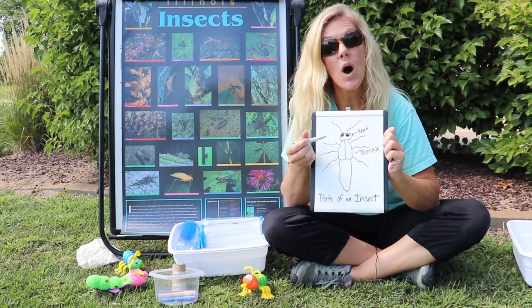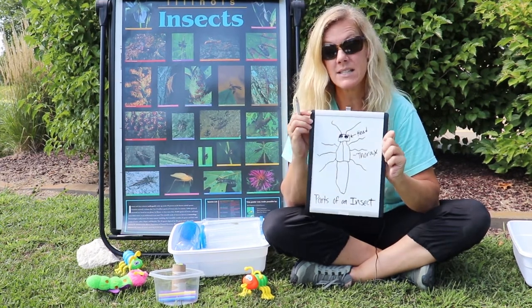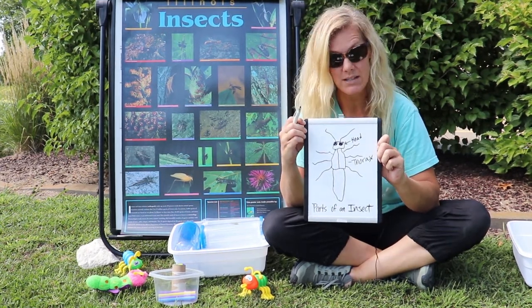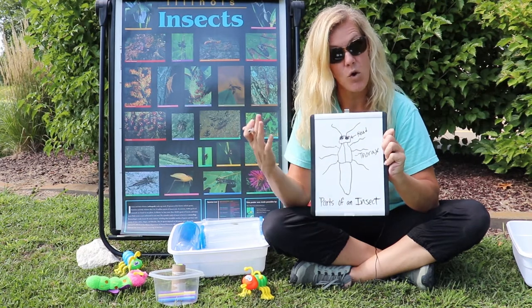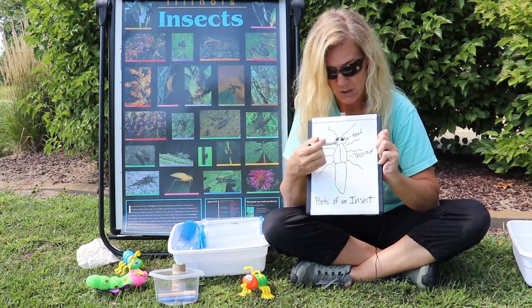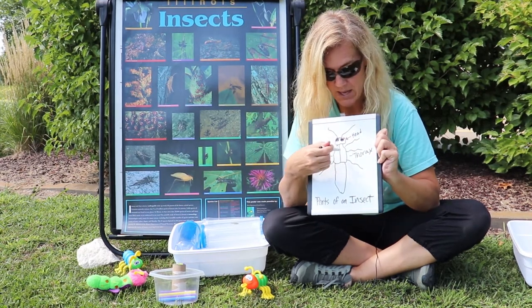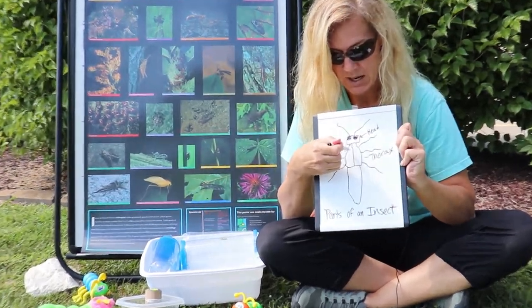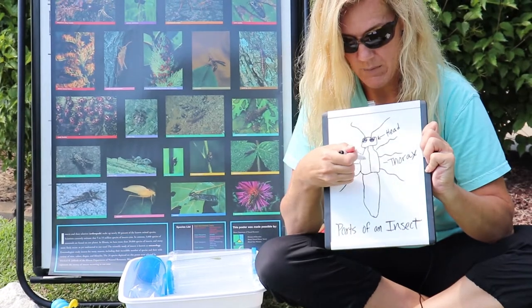Also on the thorax, some adult insects have wings. So they'll have a forewing and a hindwing, right here in this section.